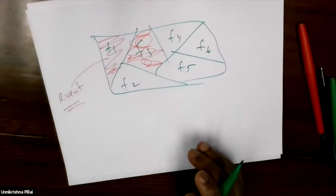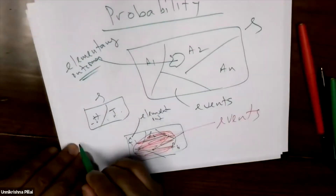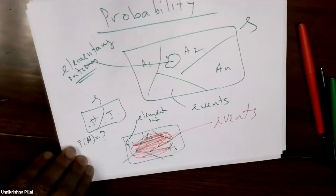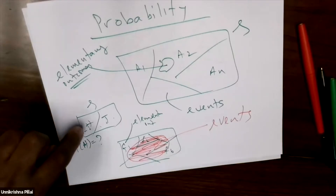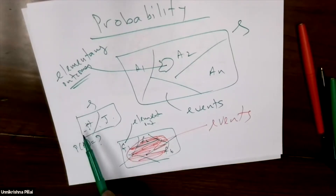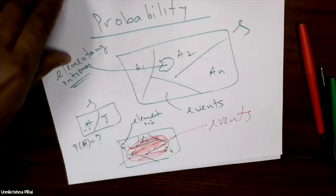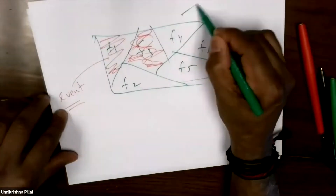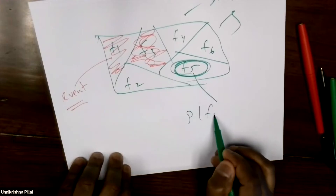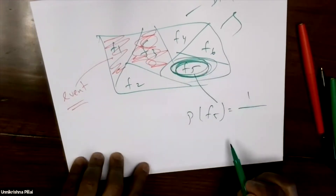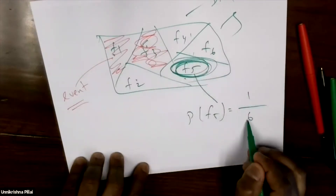Usually the probability of elementary outcomes are easy to compute. For example, if you toss a coin — the simplest experiment — there are only two outcomes. If the coin is fair, each outcome is equally likely. The probability is the number of favorable outcomes divided by the number of total outcomes. The number of favorable outcomes is one if you're looking at heads, and total outcomes is two, so one over two — half — is the probability. Similarly for a dice, if you take face 5, the probability is one over six.